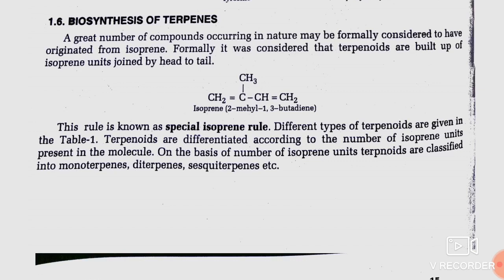Different types of terpenoids are given in the table. Terpenoids are differentiated according to the number of isoprene units present in the molecule. On the basis of number of isoprene units, terpenoids are classified into monoterpenes, diterpenes, sesquiterpenes, etc. About 30,000 terpenes are known at present in the literature. Their basic structure follows a general principle — the 2-methylbutane residue, less precisely referred to as isoprene, designated as C5n, built up the carbon skeleton of terpenes. This is the isoprene rule, found by Ruzicka and Wallach.